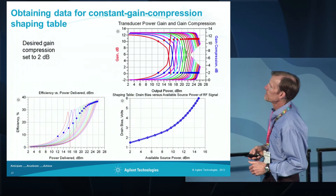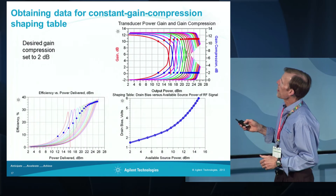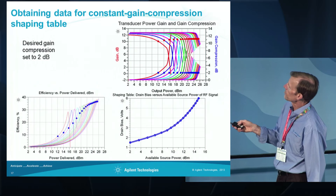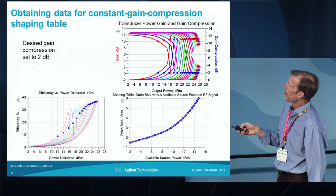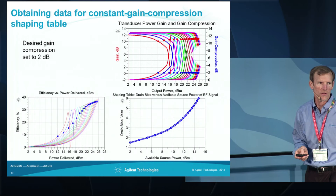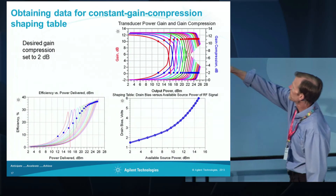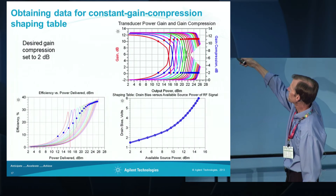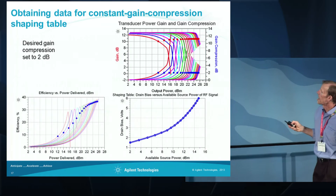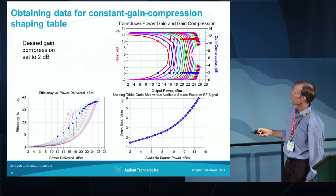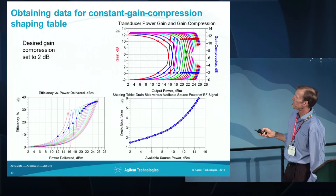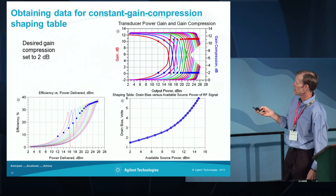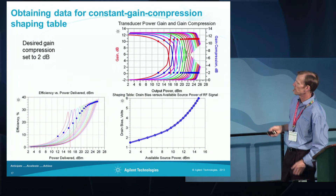From the same simulation, we can also plot the gain compression data and generate a shaping table that corresponds to a particular level of gain compression. In this case, I'm taking a constant slice through the curve at 2 dB gain compression, and this is the shaping table obtained from that data. This allows us to keep the amplifier operating at 2 dB gain compression.